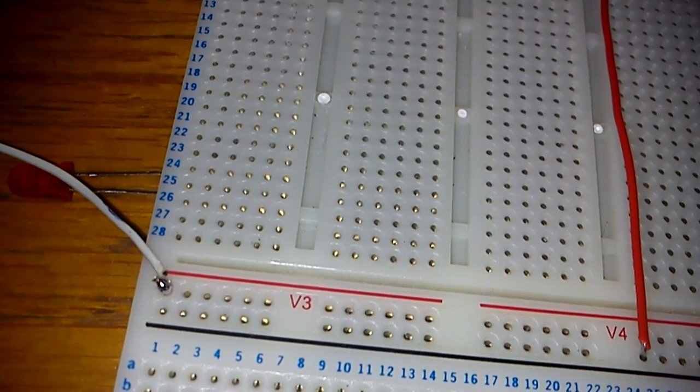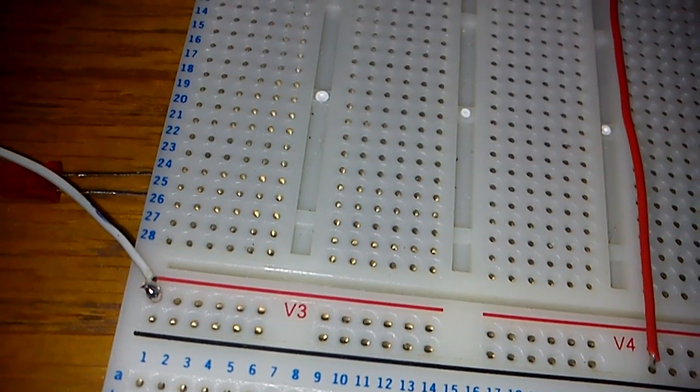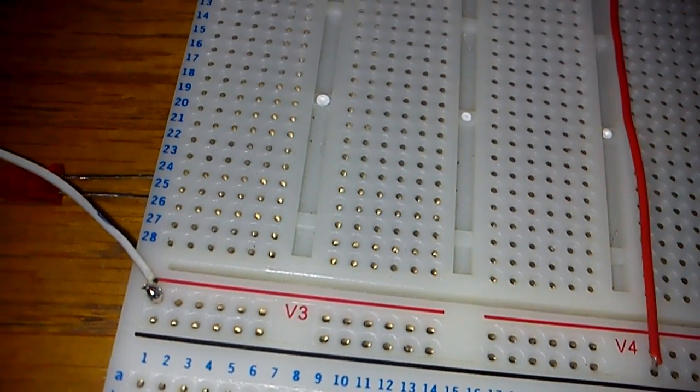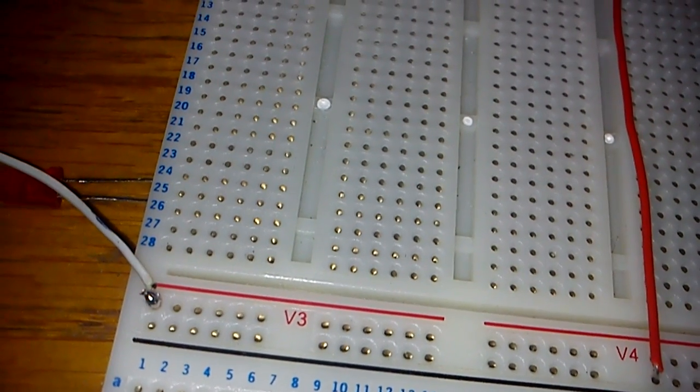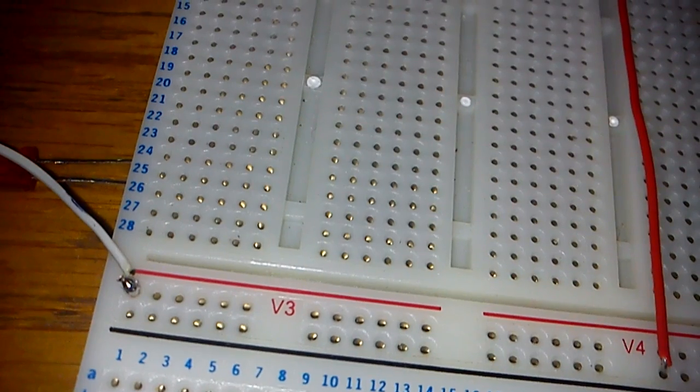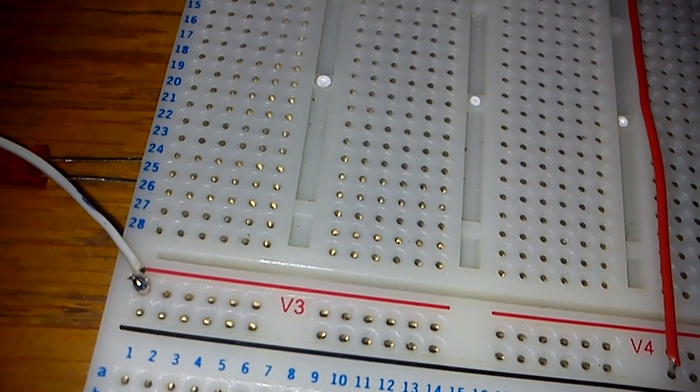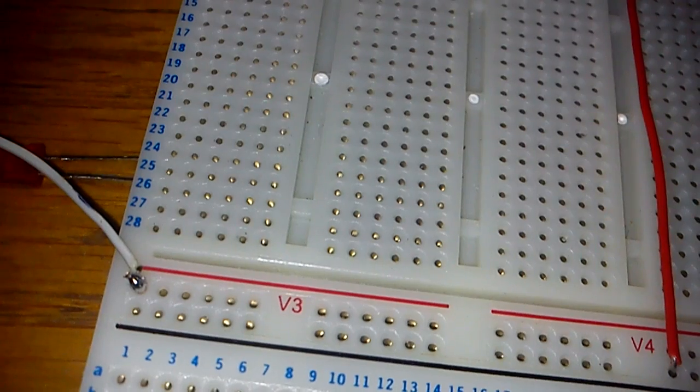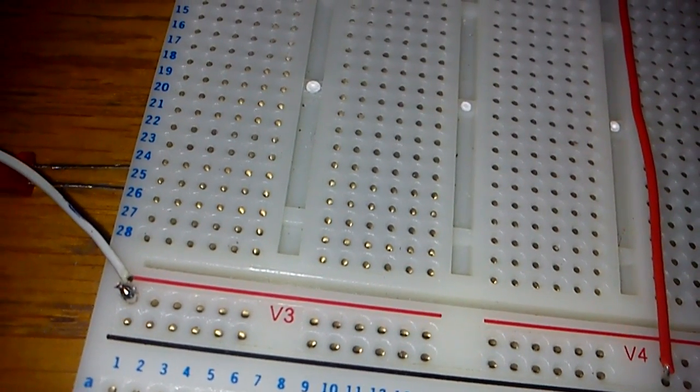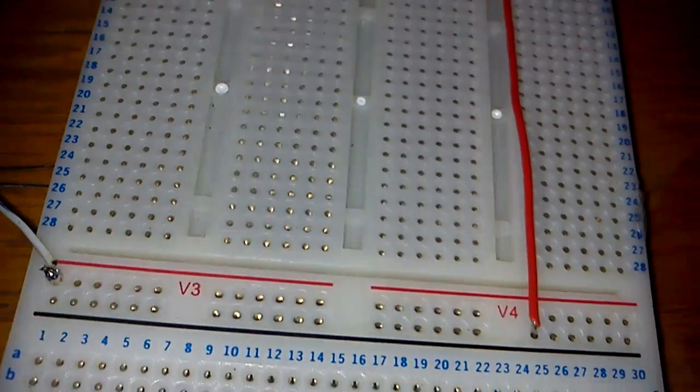The 5 volt gives whatever the power supply is able to give. So if you've got a 1 amp power supply and the board is drawing 700 milliamps, then you should have 300 milliamps to play with. Now this varies depending on the power supply you've got connected to the Raspberry Pi.